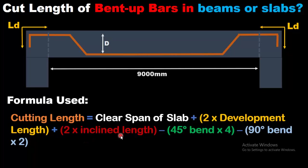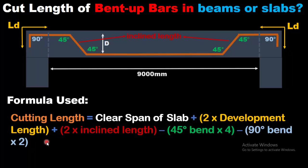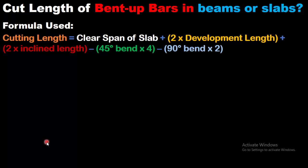Then there comes 2 times inclined length — this is the inclined length of the bent up bar. Then there are 2 types of bend deductions: one is 45-degree bend and the other is 90-degree bend. There are 4 45-degree bends as you can see here: 1, 2, 3, 4. Then there are 90-degree bends at the corners of the beam or slab. So keep this formula in mind and remember it.